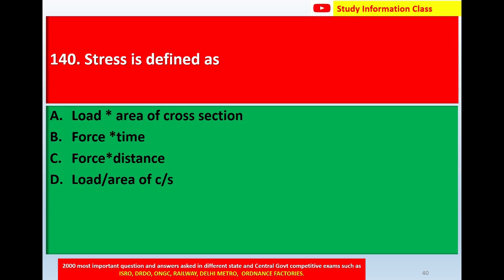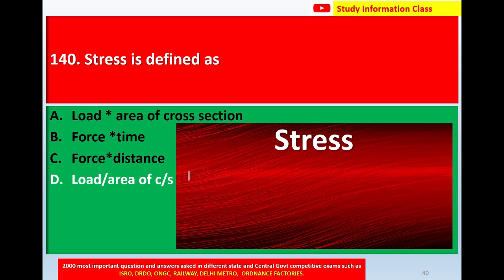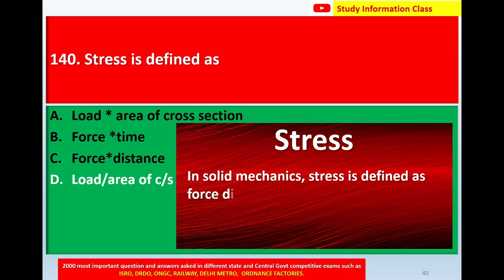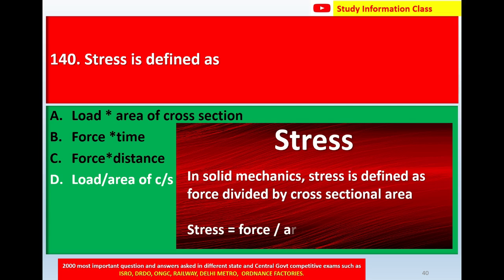Question number 140: Stress is defined as — option A load multiplied by area of cross section, option B force multiplied by time, option C force multiplied by distance, option D load divided by area of cross section. The correct answer is option D. In solid mechanics, stress is defined as force divided by cross-sectional area: stress = force / area. Thank you for watching, Jai Shri Rama.